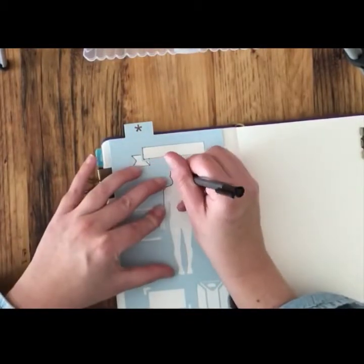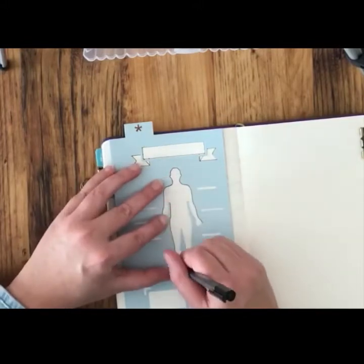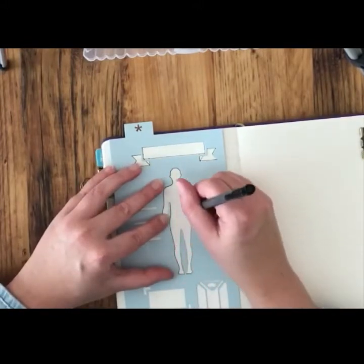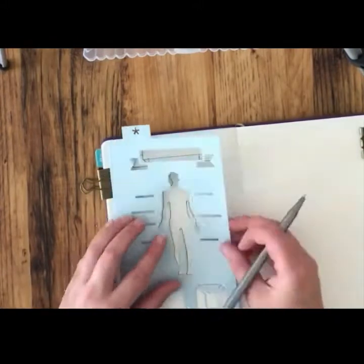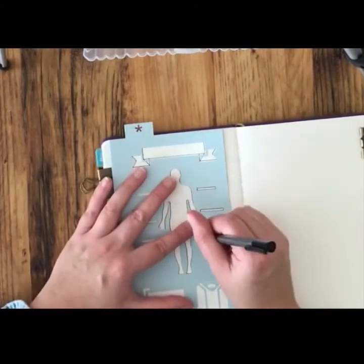Then we're going to go around the body shape. What you'll find here is with the fine detailed parts, they're in between the legs and in between the arms. If you pop a finger just to hold the stencil down, it means that the stencil won't move while you're tracing around.